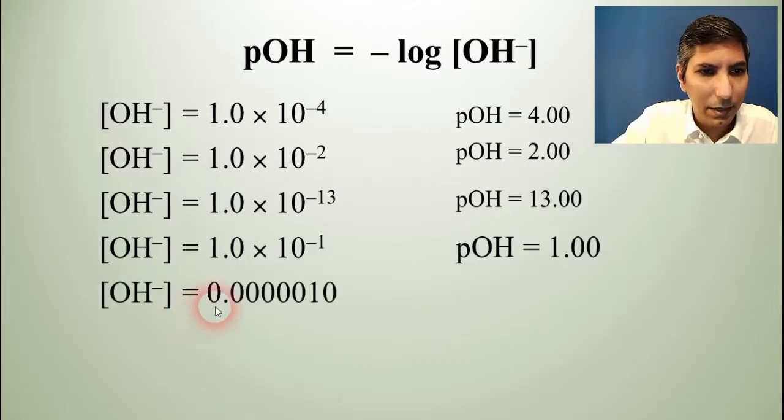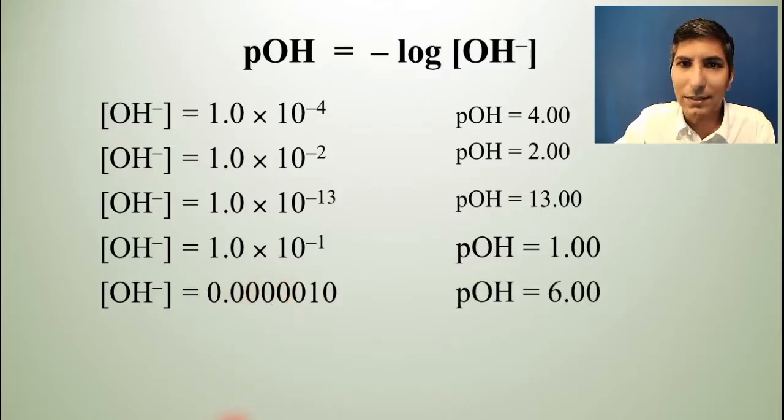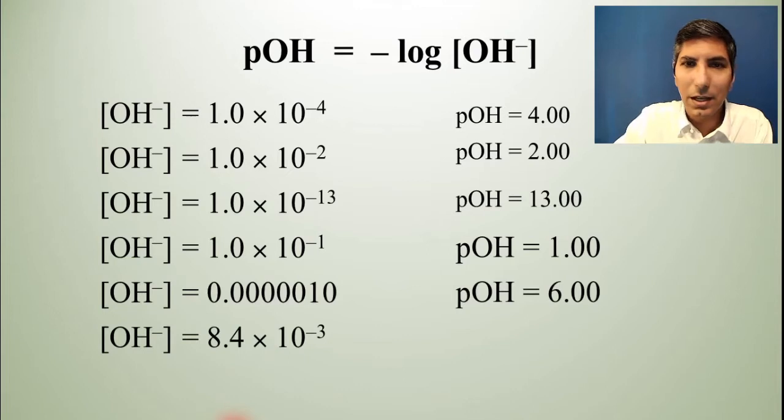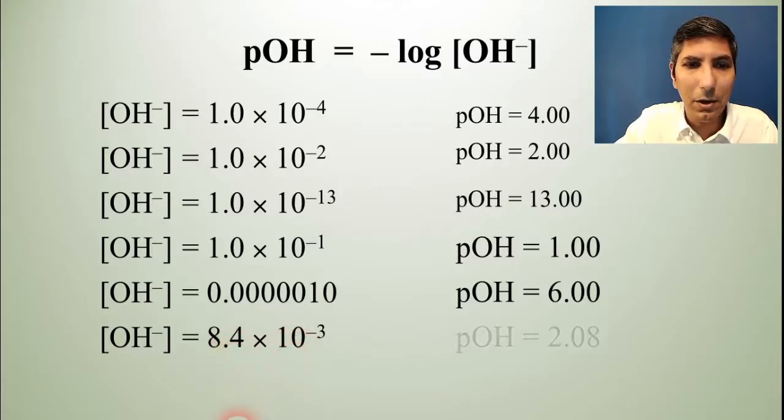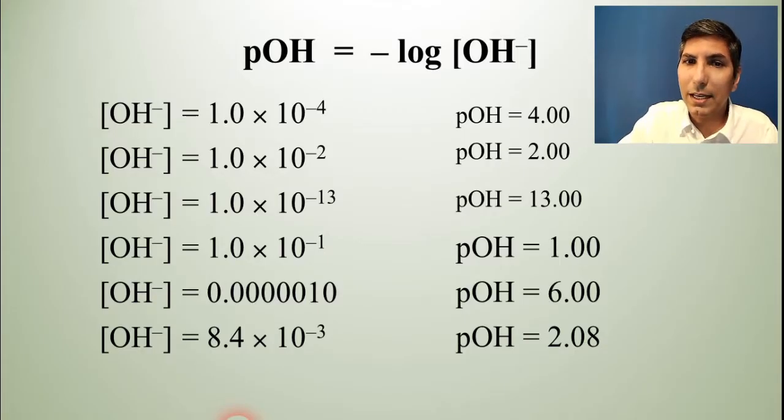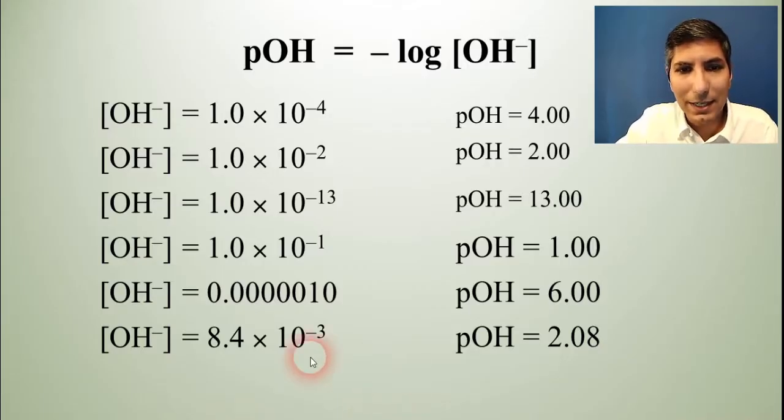If you have something like this, 1 times 10 to the negative 6th, then the pOH is going to be 6. Sometimes, of course, you will have to key this into the calculator and you have your log button on your scientific calculator to do this for you. Just take the negative log of 8.4 times 10 to the negative 3rd and you'll find that the pOH is 2.08. So fairly simple to do that calculation. You should be able to key that into your calculator fairly quickly in the matter of just a few seconds to get the answer.